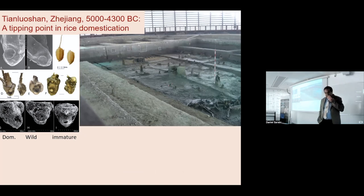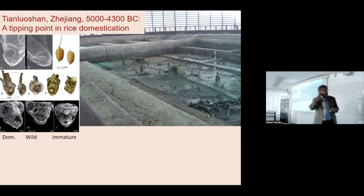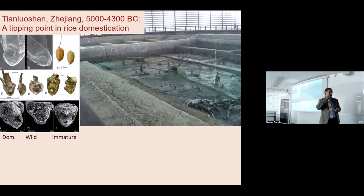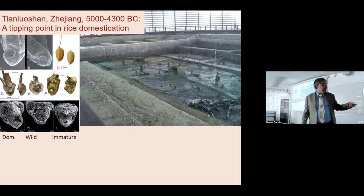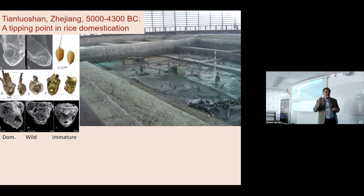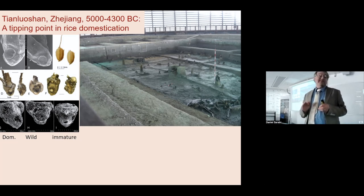When I was younger, I had just started a collaboration on a site called Tianluoshan, discovered in 2004. We did fieldwork including systematic archaeological sampling in 2006. It's a waterlogged site, and among that waterlogged material there are lots of wild foods and acorn nutshells, but also lots of rice and rice spikelet bases. Prior to this, no one had even tried to recover rice spikelet bases in China, because again the question was simply: is it wild or domesticated?